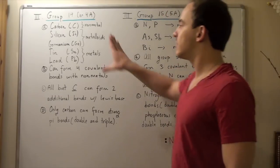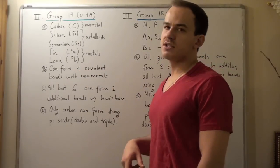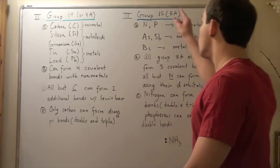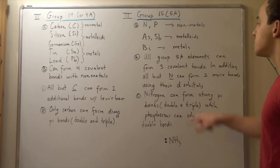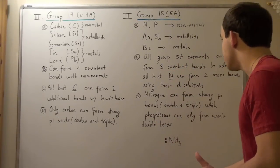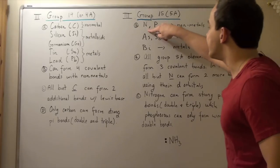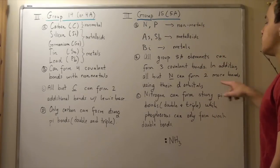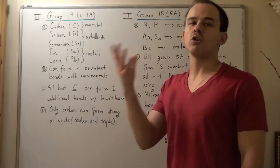Unlike group 14, which forms four covalent bonds with other nonmetals, group 15 or 5A forms three covalent bonds. In addition, every single atom except nitrogen can form two more bonds using their higher d orbitals.